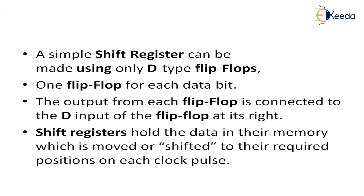When your clock signal is enabled, whatever data you give at the input will appear at the output. If D is equal to 1 and the clock is enabled, the output will also be equal to 1. If D input is 0, the output will also be equal to 0. That is what a D flip-flop is. Now, I am going to use this D flip-flop for constructing a shift register. In our course, we have a 1-bit shift register. For storing each data bit, we need a single flip-flop — one flip-flop for each data bit.